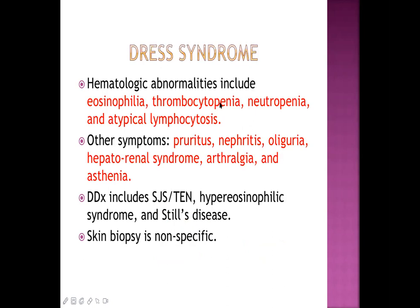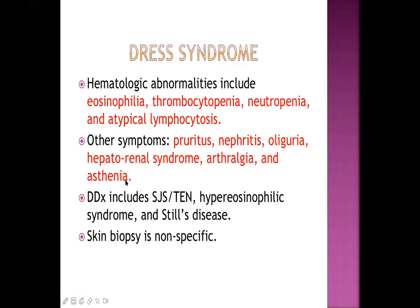The hematological abnormalities in DRESS syndrome include eosinophilia - as the name suggests, the 'E' stands for eosinophilia - thrombocytopenia, neutropenia, and atypical lymphocytosis, seen on CBC. Other symptoms include pruritus, oliguria from kidney involvement, hepatorenal syndrome from liver involvement, arthralgia, and asthenia or weakness, possibly due to anemia.